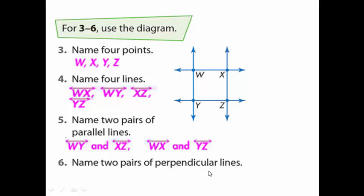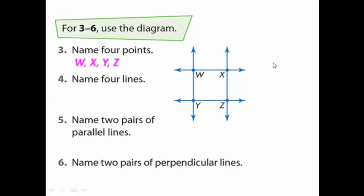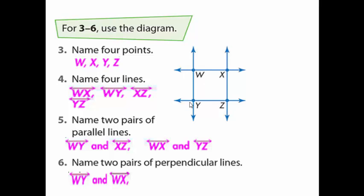The last question here asks for two perpendicular lines. Let's remember what perpendicular means — two lines that form a right angle shape. We have more than two here. For example, XZ and YZ are perpendicular. You can also choose WY and YZ, or WY and WX — they are perpendicular. You can choose any two; you have many options.